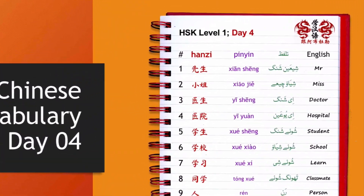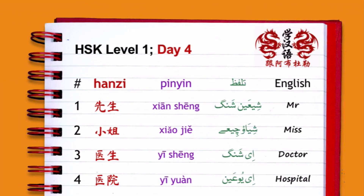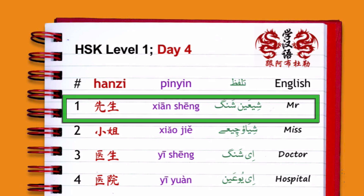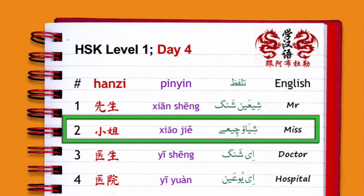Today's first word is 先生 (xiānsheng). 先生 means 'mister.' Sometimes for a husband we also use the same vocabulary — 先生.